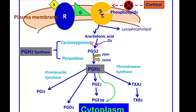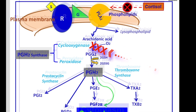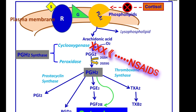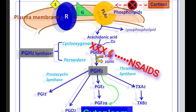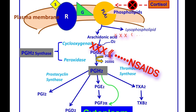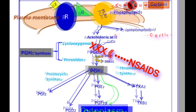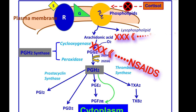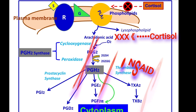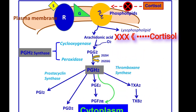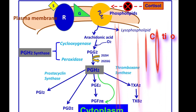In summary, NSAIDs will reduce inflammation by inhibiting COX-1 and COX-2, and specifically reduce the production of prostaglandins and thromboxanes. On the other hand, cortisol will inhibit the release of arachidonic acid by phospholipase A2, and will therefore inhibit the synthesis of all eicosanoids: prostaglandins, thromboxanes, and leukotrienes.